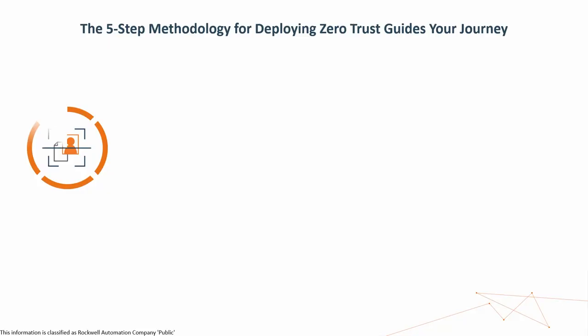If we do that, we can create a Layer 7 policy. Ultimately, Zero Trust is a Layer 7 policy statement. Now, there is a five-step methodology that will guide your journey. The first thing you need to do is define your protect surface.